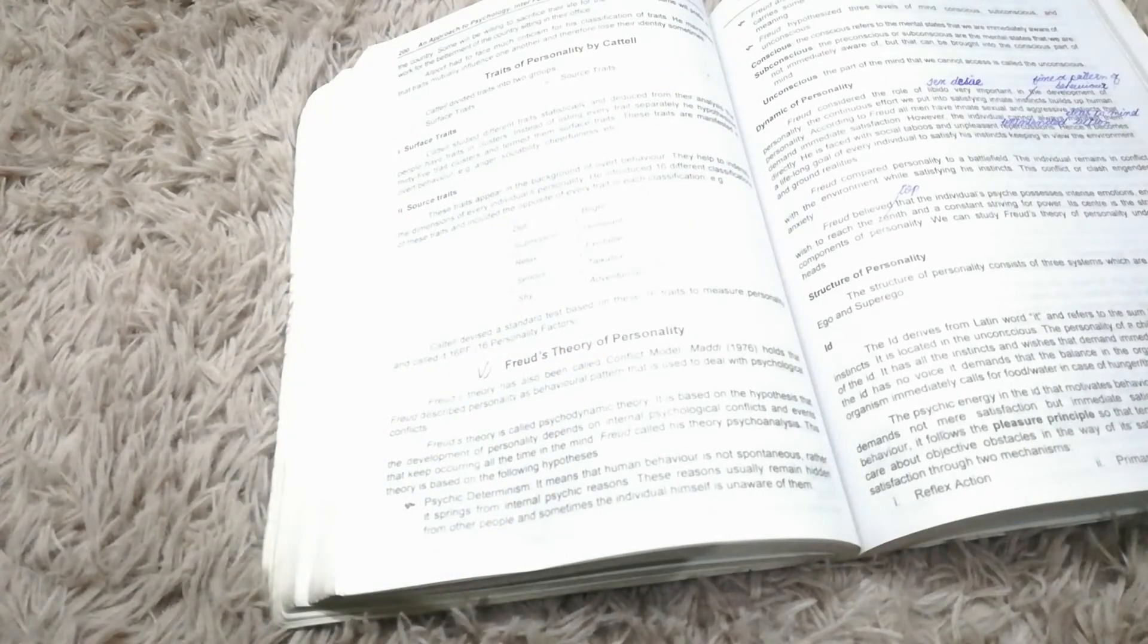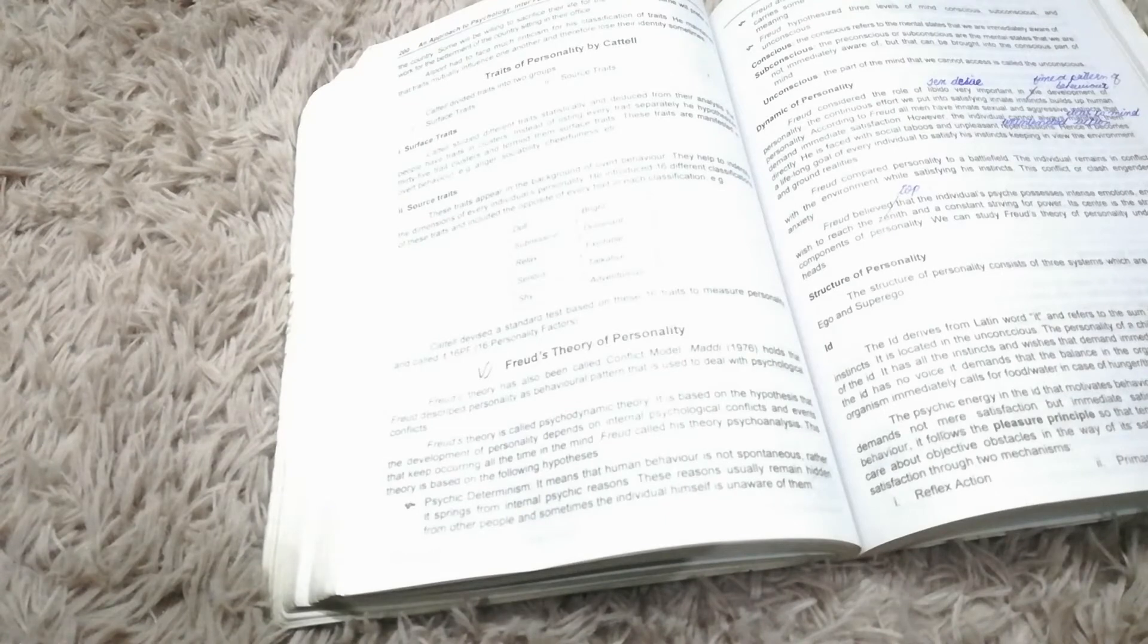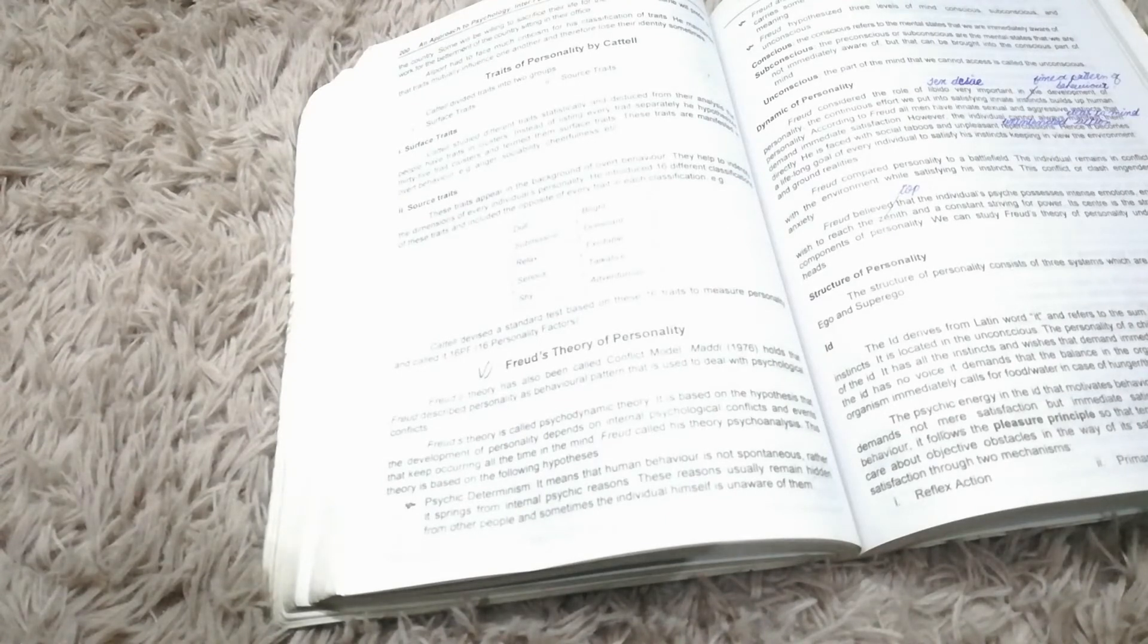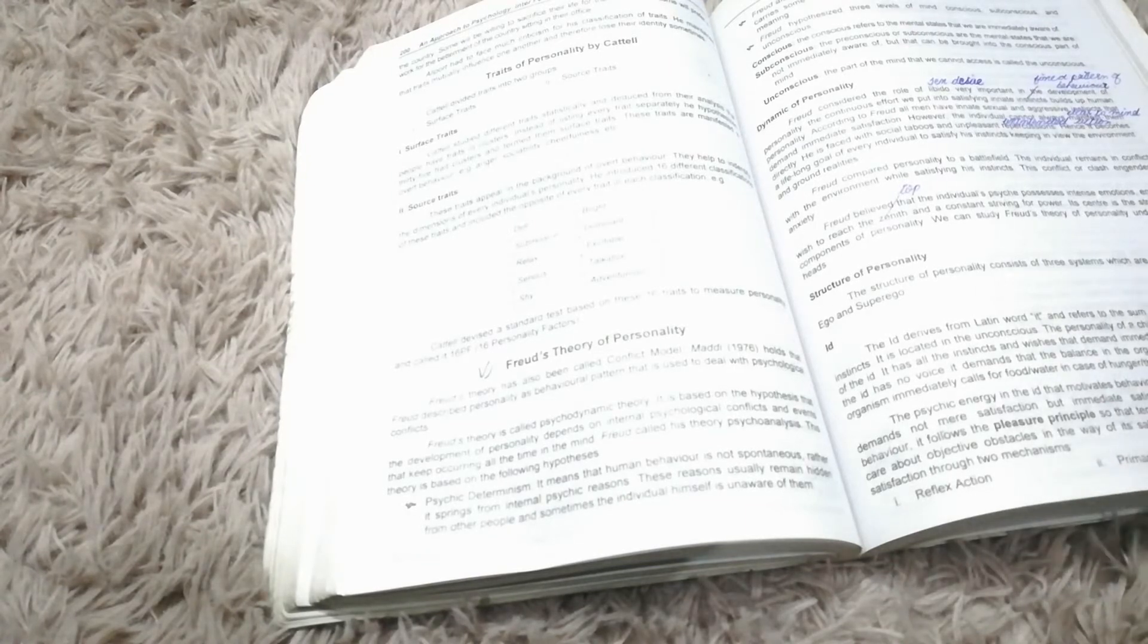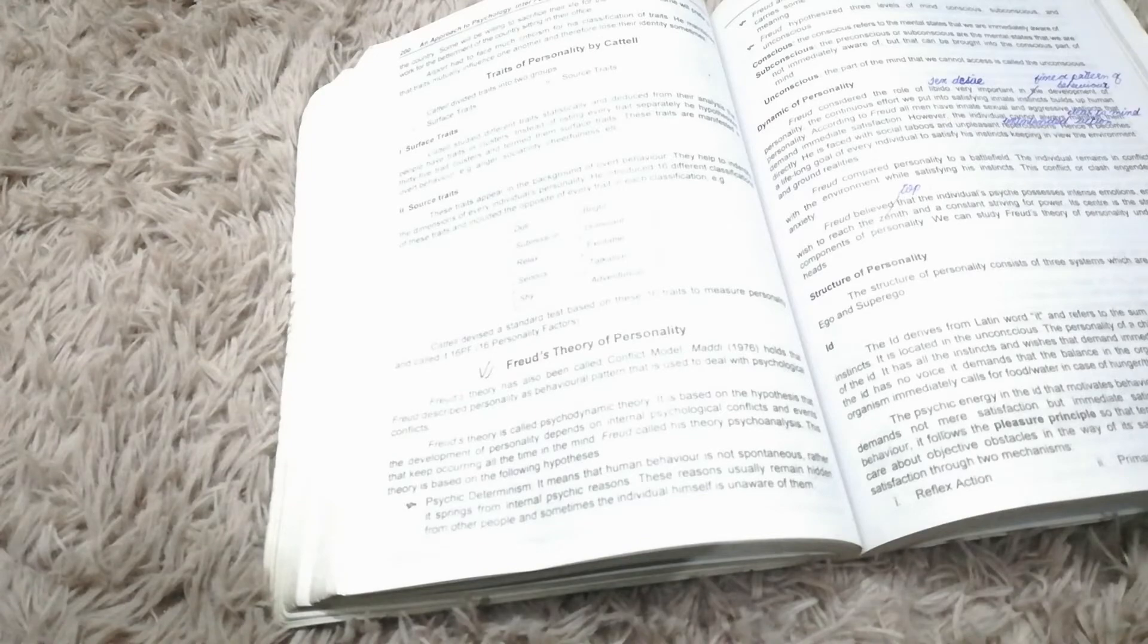Conscious, Subconscious and Unconscious. Obviously very important. It is a part of this long question as well as it can be asked as another short question. Dynamic of personality. Dynamic of personality - you can also not. Structure of personality. It is Id, Ego and Super Ego. You can also short and long. Very important.